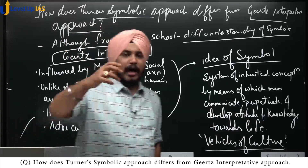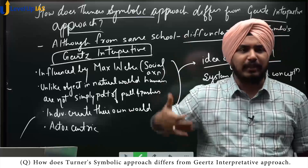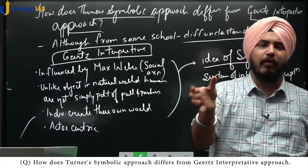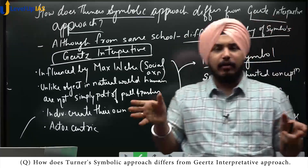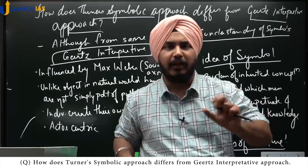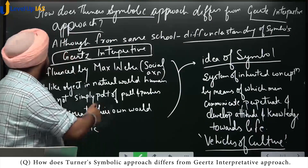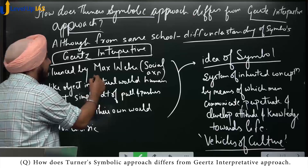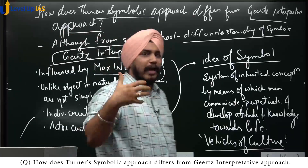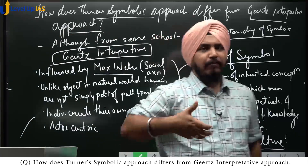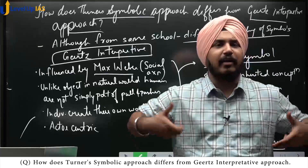Then explain Turner's influences and how that generated Turner's idea of symbol — because these ideas of symbol were actually different. If we look at Geertz, he was influenced by Max Weber's concept of social action. Max Weber basically talks about an individual or action-centric approach.